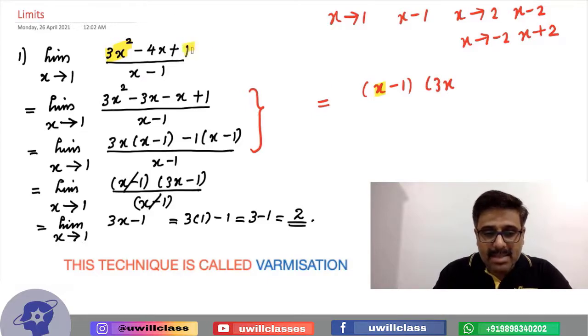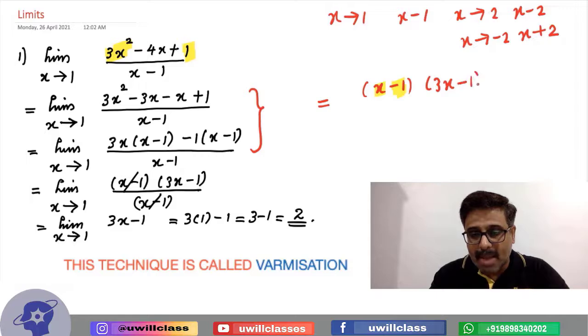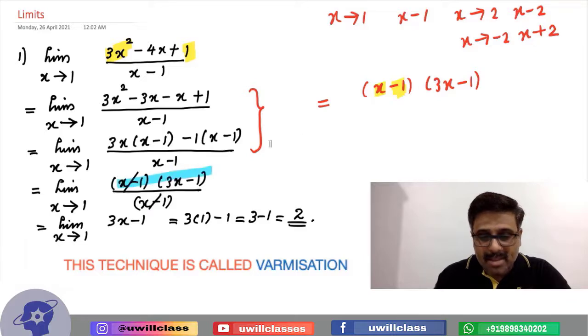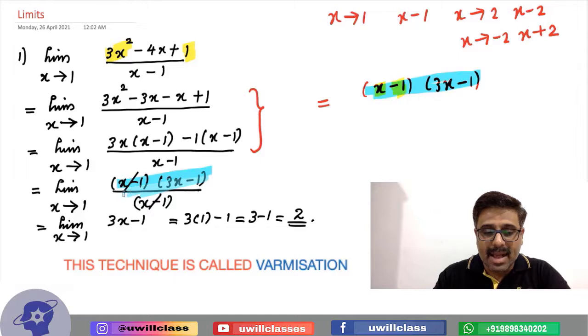And last term or last number divided by last number. So, what is plus 1 divided by minus 1? Minus 1. See the magic! x minus 1, 3x minus 1, we get directly. How come?